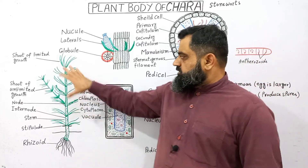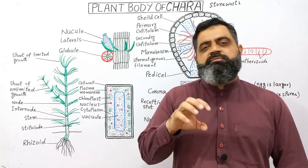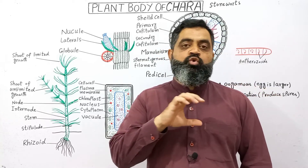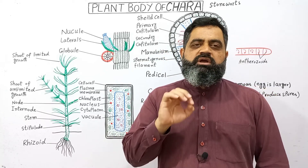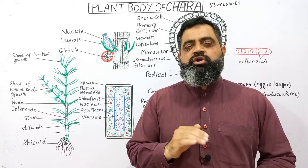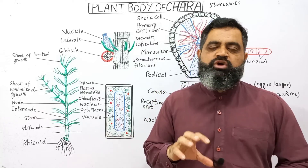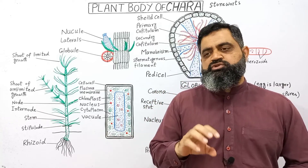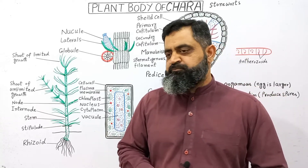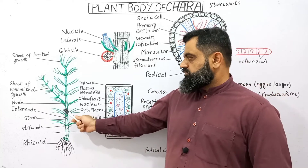These plants are usually submerged in water and are coated with calcium carbonate crystals on all of their body surface. That is why these plants are usually known as stonewort.